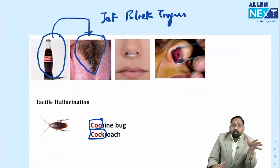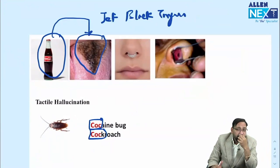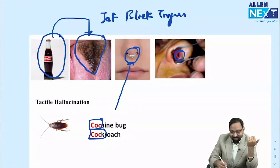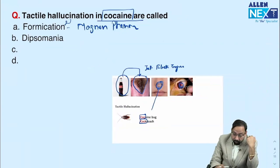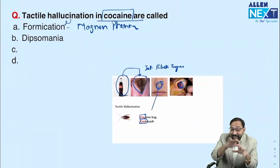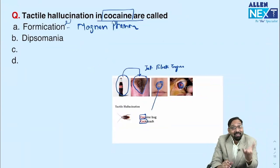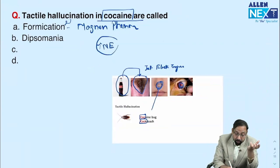If cocaine is used frequently, it causes vasoconstriction, which leads to perforation of the nasal septum. Another mnemonic: coca is worn at the nose most frequently — nasal septal perforation. A question was asked: which of the following is NOT a symptom of cocaine intoxication? Cocaine causes tachycardia and increased BP due to increased norepinephrine.